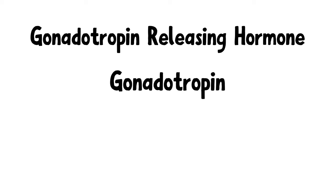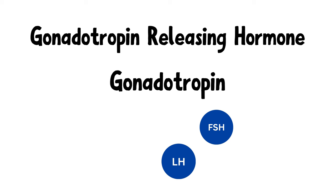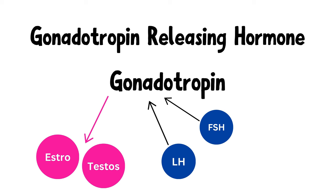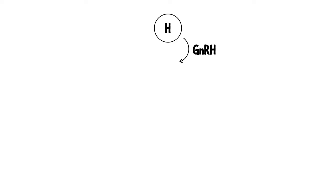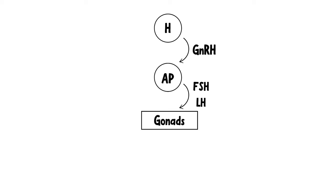Gonadotropins like FSH and LH are hormones that stimulate the gonads to release hormones like estrogen and testosterone. GnRH is a hormone produced in the hypothalamus. It acts on the anterior pituitary gland and stimulates it to release the gonadotropins FSH and LH.